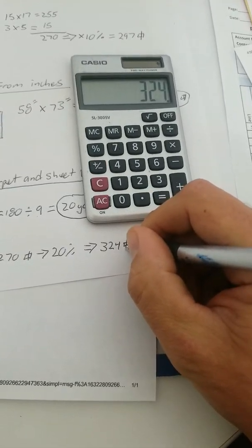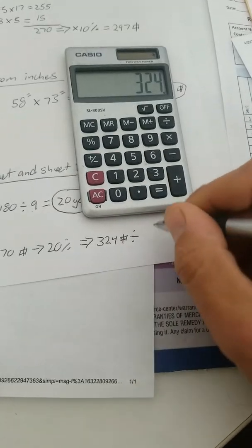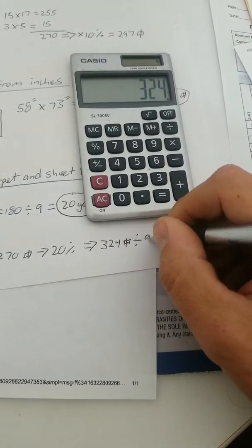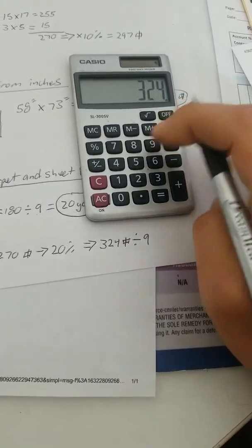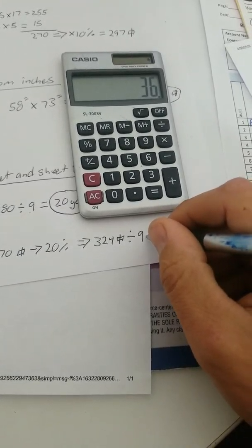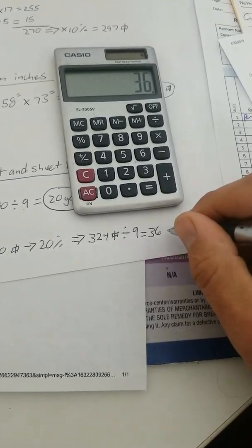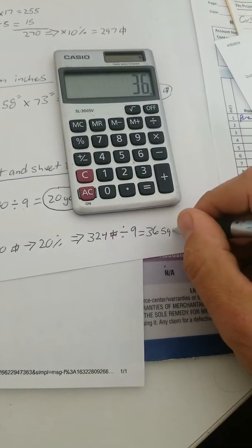Now, we're going to convert that into yards. By dividing by what? Divide that by 9. And that will give you 36. What? 36 square yards.